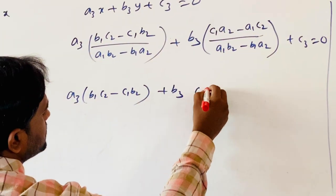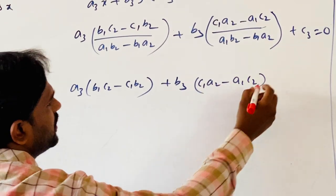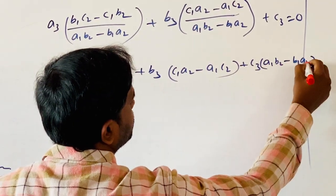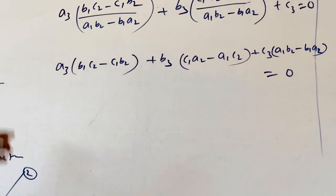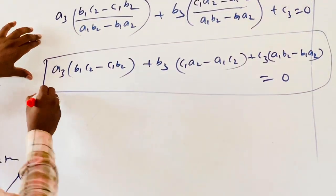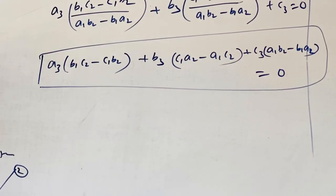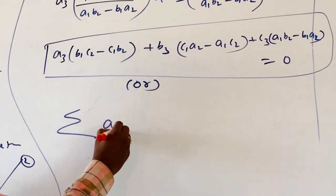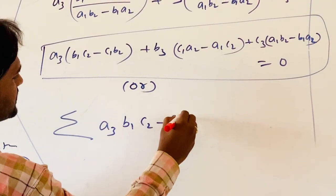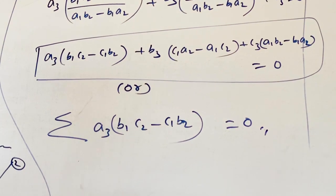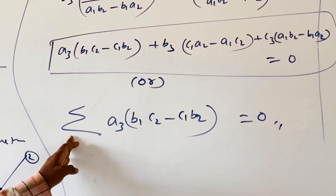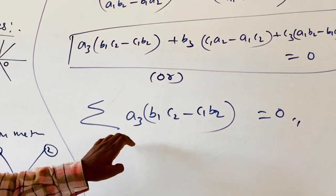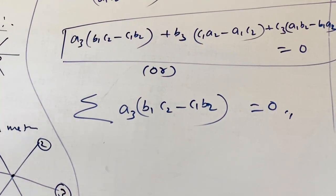Observe — we can write this as the condition for the given 3 lines to be concurrent. We can write it in summation form: σ A3·(B1·C2 − C1·B2) = 0. Here, sigma means summation — sigma A means A + B + C. So by expanding the A3, B3, C3 values using this condition, we will find whether the given 3 straight lines are concurrent or not.